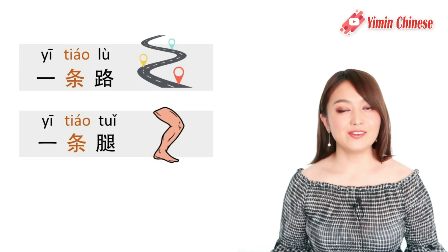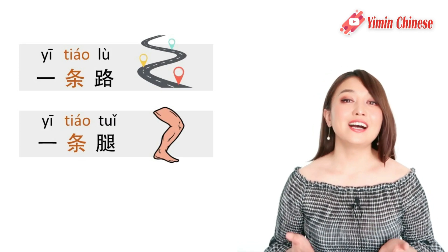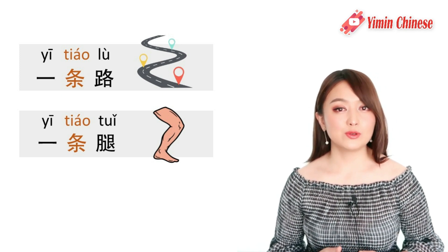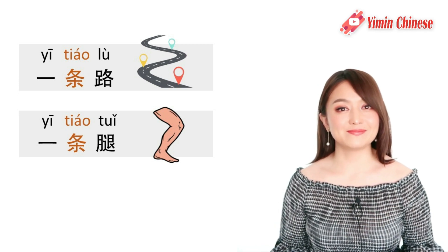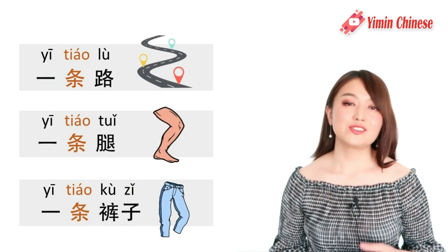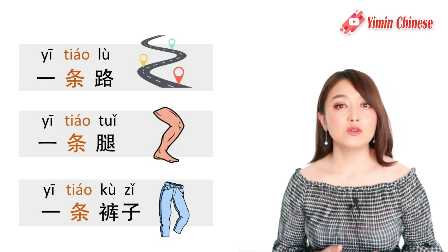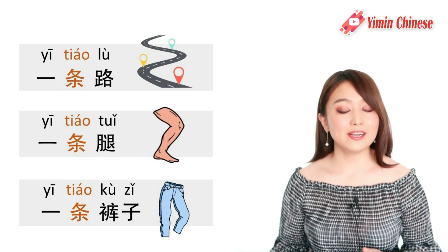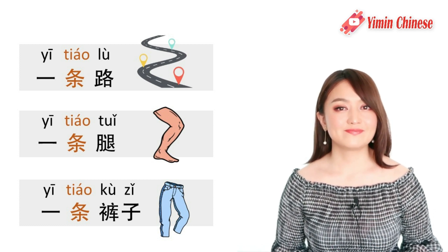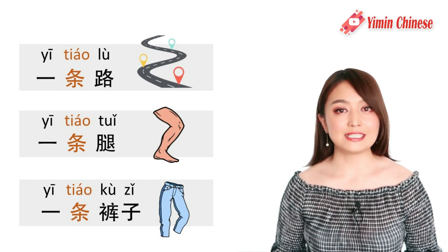Did you know that 条 is also a measure word for legs? So 'a leg' is 一条腿, because it's long and slim. Also, it's a measure word for pants — so 'a pair of pants' in Chinese is 一条裤子, to emphasize the characteristics of being long and slim.